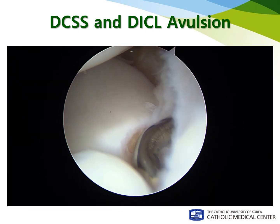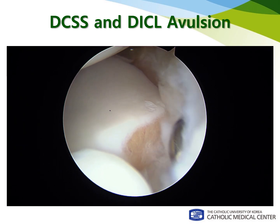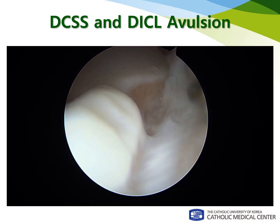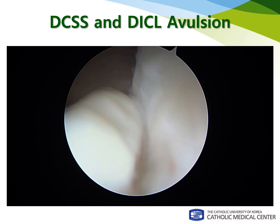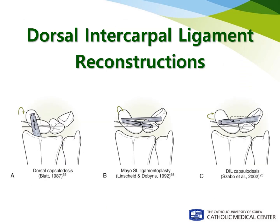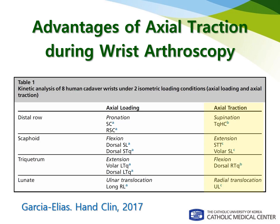However, I found there are several patients who had a lax dorsal intercarpal ligament but relatively intact DCSS, as you can see in this video. So I decided to focus on tightening the dorsal intercarpal ligament, specifically the scapholunate triquetral ligament as described by Haggard. Open procedures for the dorsal intercarpal ligament reconstructions are well described in the literature, but I thought arthroscopy itself has many advantages to reduce carpal deformities.